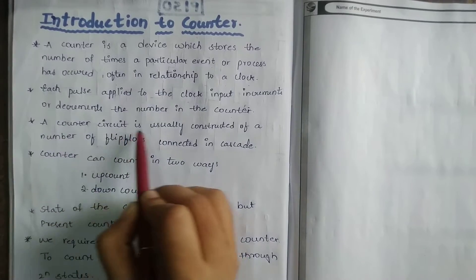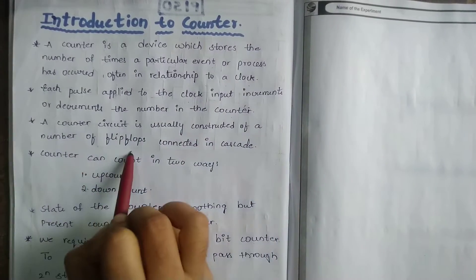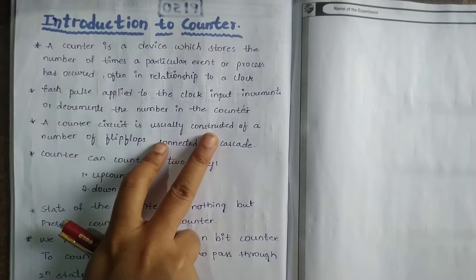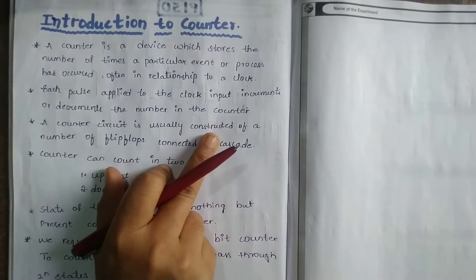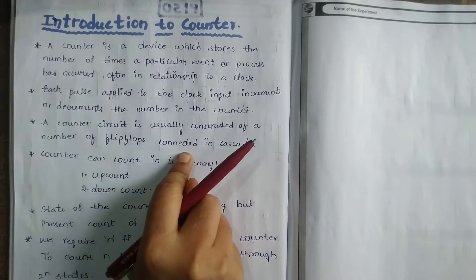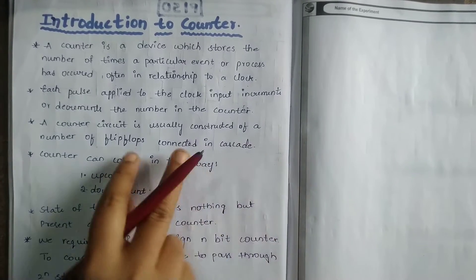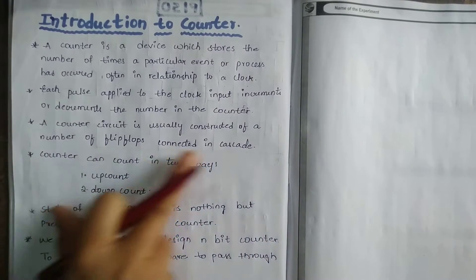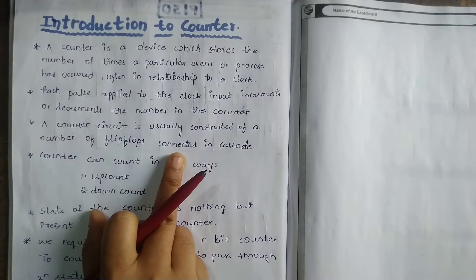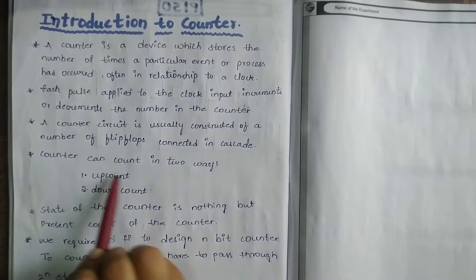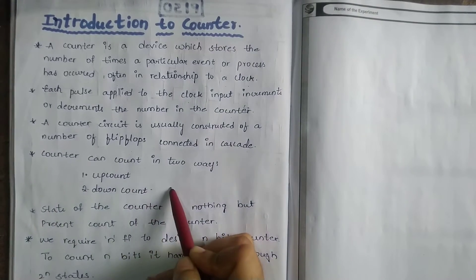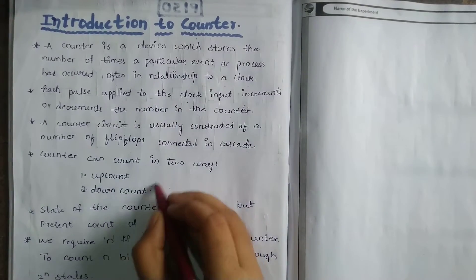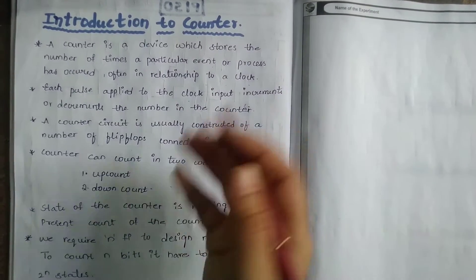A counter circuit is usually constructed of a number of flip-flops connected in cascade. So flip-flops form the application of this counter. A group of flip-flops cascaded together is known as a counter. A counter can count in two ways: up-count and down-count.